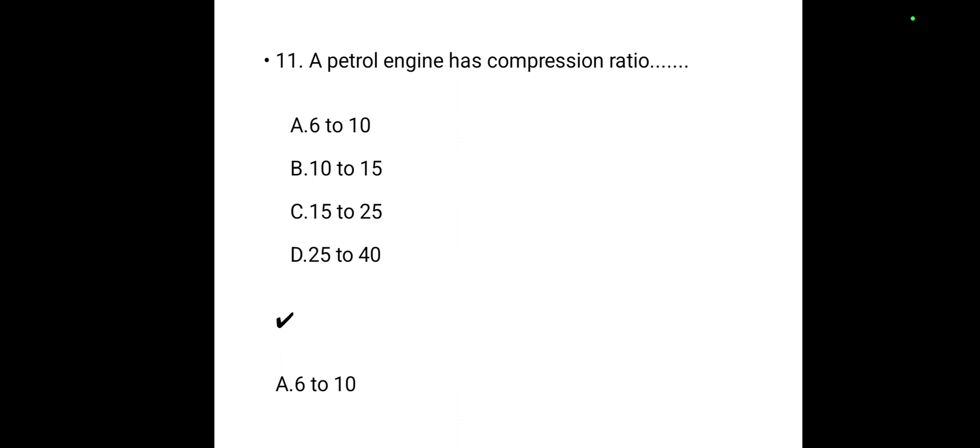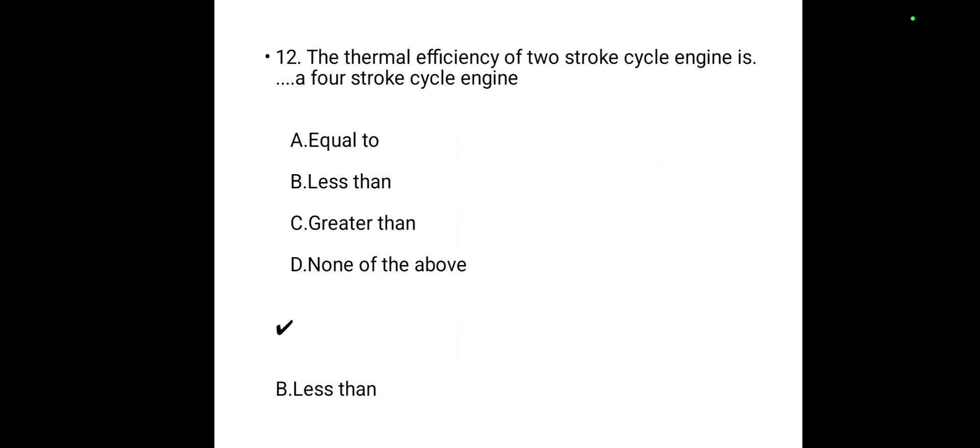A petrol engine has a compression ratio of 6 to 10 — that is the correct answer. The thermal efficiency of a two-stroke cycle engine is less than that of a four-stroke cycle engine — Option B is correct. Supercharging increases the power developed by the engine.